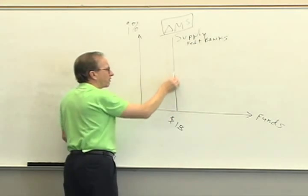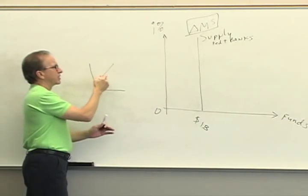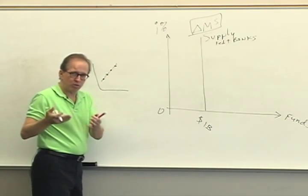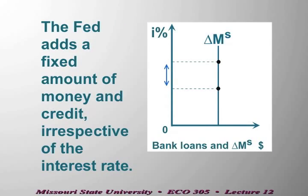I've drawn this as a vertical curve. Earlier, when talking about household saving, we said that as the interest rate goes up, it's an incentive for a homeowner or individual to save a little more, because the reward is bigger. But the Federal Reserve is not motivated by self-interest or profit-seeking. Their goal is: we want to pump one billion dollars of money and credit into the economy — and that's how much they want to put in whether the interest rate is low, medium, or high. So this is just a vertical curve: it is the amount the Fed wants to inject into the economy.